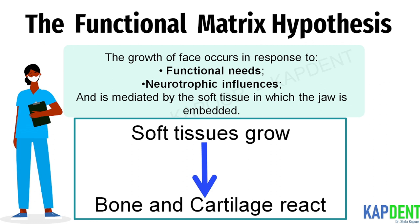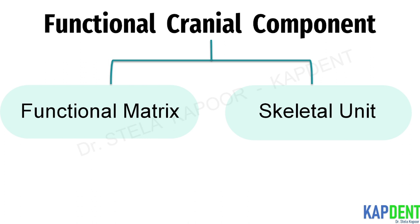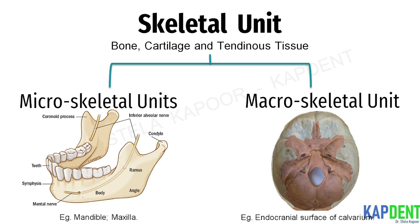The functional cranial component basically consists of the functional matrix and the skeletal unit. The skeletal unit is comprised of bone, cartilage and tendinous tissues. When a bone is comprised of several contiguous skeletal units, they are termed microskeletal units. For example, the mandible has within it the alveolar, angular, condylar, gonial, mental, coronoid and basal microskeletal units.